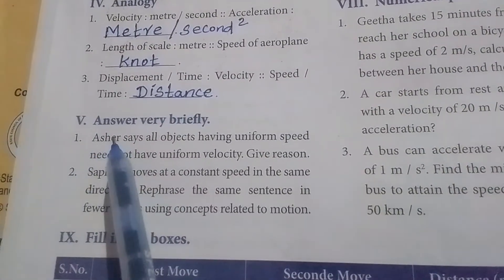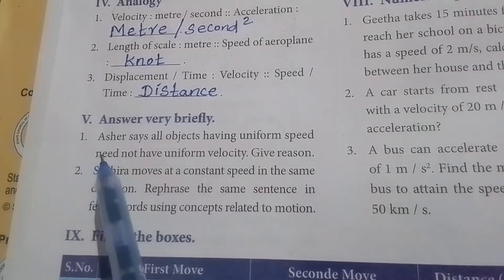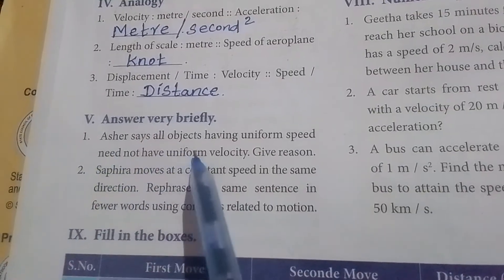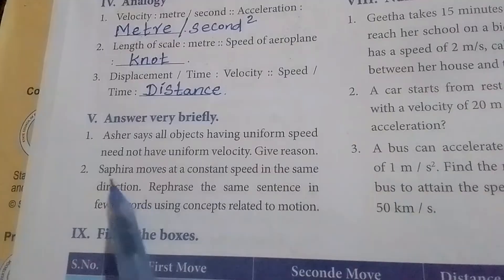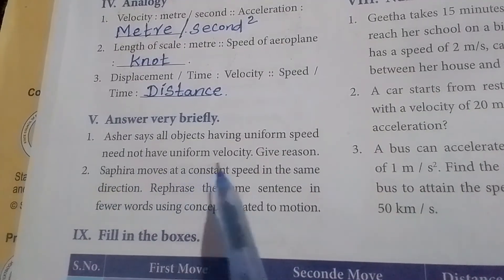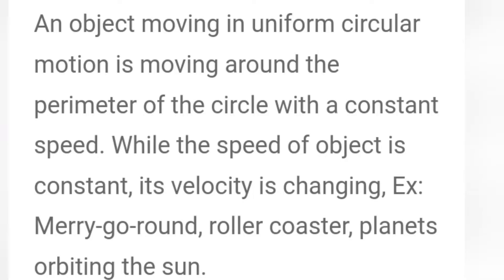Fifth Roman letter: Answer very briefly. First one: Assert that all objects having uniform speed need not have uniform velocity. Give reason. Answer: An object moving in uniform circular motion is moving around the perimeter of the circle with a constant speed. While the speed of object is constant, its velocity is changing. Example: merry-go-round, roller coaster, planets orbiting the sun.